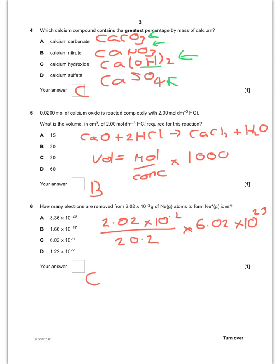So for question 5, you've got to get the equation right, which I've written below. The volume in centimetres cubed that you require is the number of moles divided by the concentration. If you have a look at the equation, for every 1 calcium oxide, you need 2 HCls. So if you work out the number of moles of calcium oxide, they've told you the number of moles, so you need to double that to find the number of moles of HCl, which is 0.04. The concentration they've told you is 2. You times that by 1,000, and you will end up with the answer being 20 centimetres cubed.